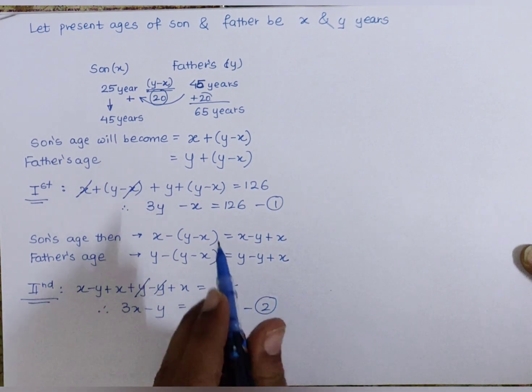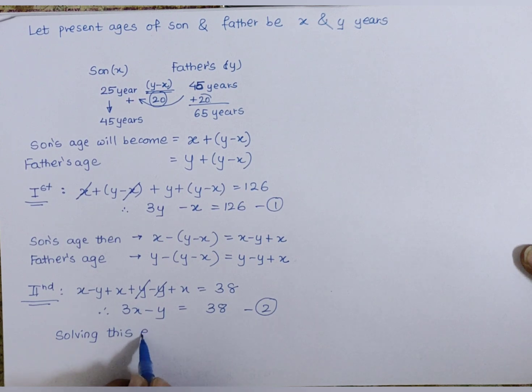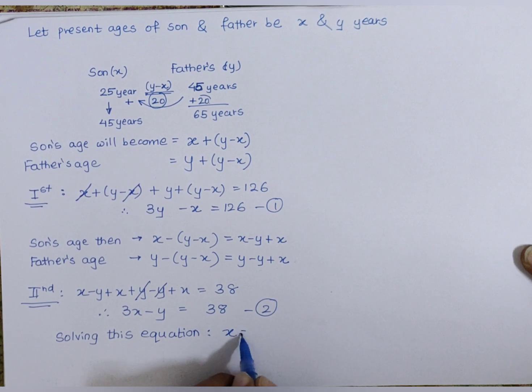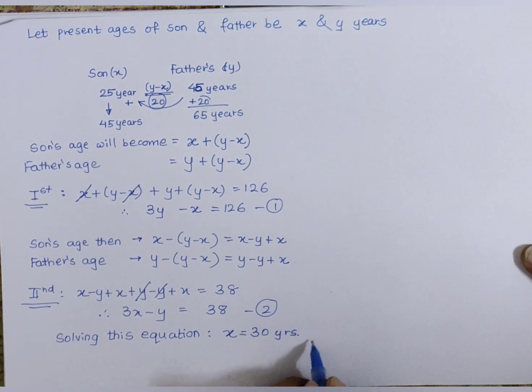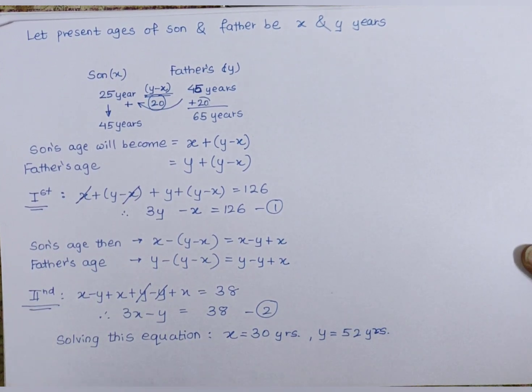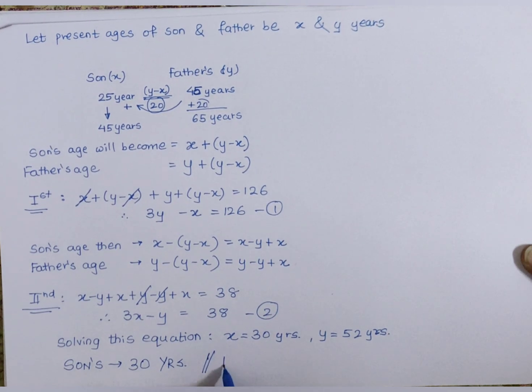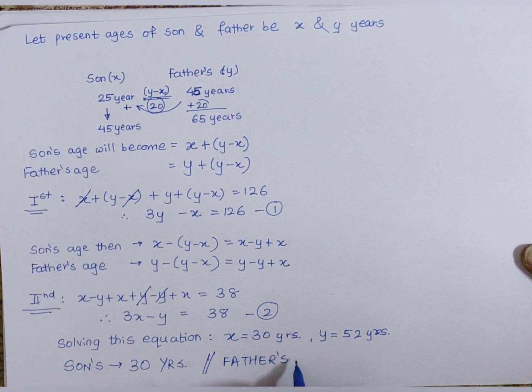Now I have both equations. When solving this equation, it gives me x as 30 years and y as 52 years. So the son's present age is 30 years and the father's present age is 52 years.